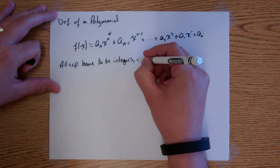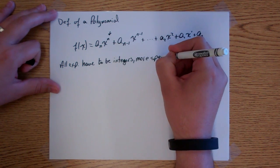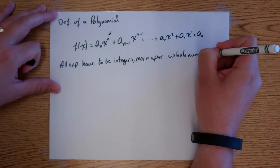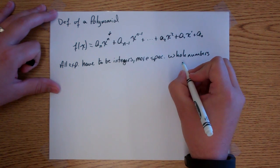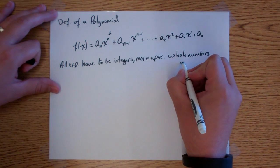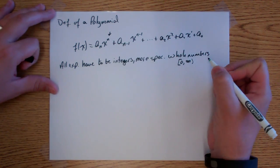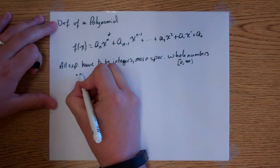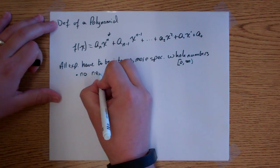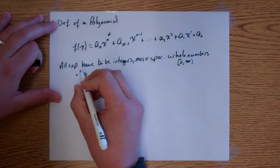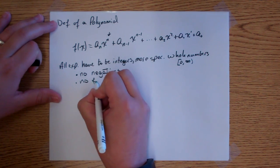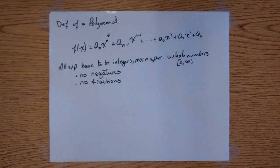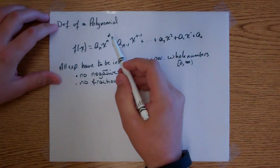More specifically, whole numbers. Because whole numbers, if you remember, they start at 0 and go to positive infinity. So you can't have negatives, and you can't have fractions. So if it's going to be a polynomial, you have to have no negatives, no fractions — all whole numbers for your exponents.